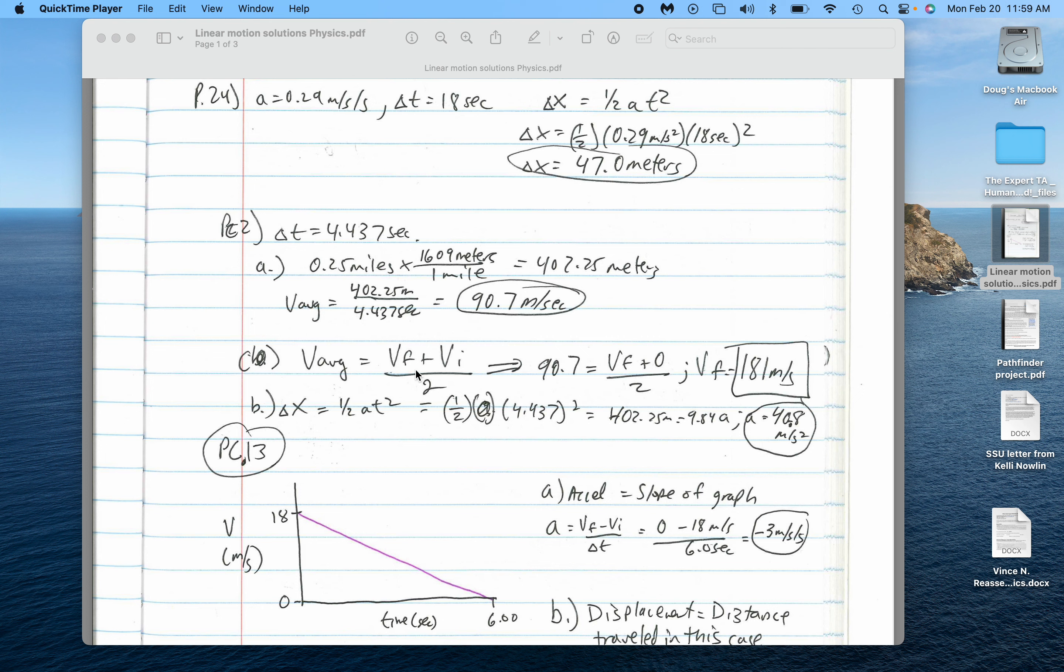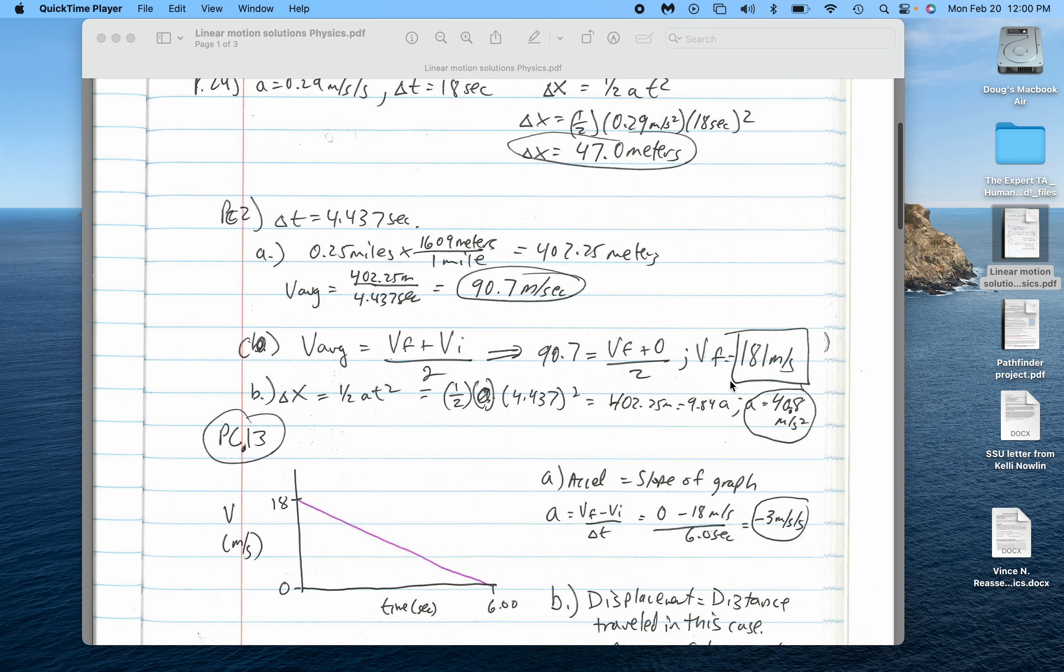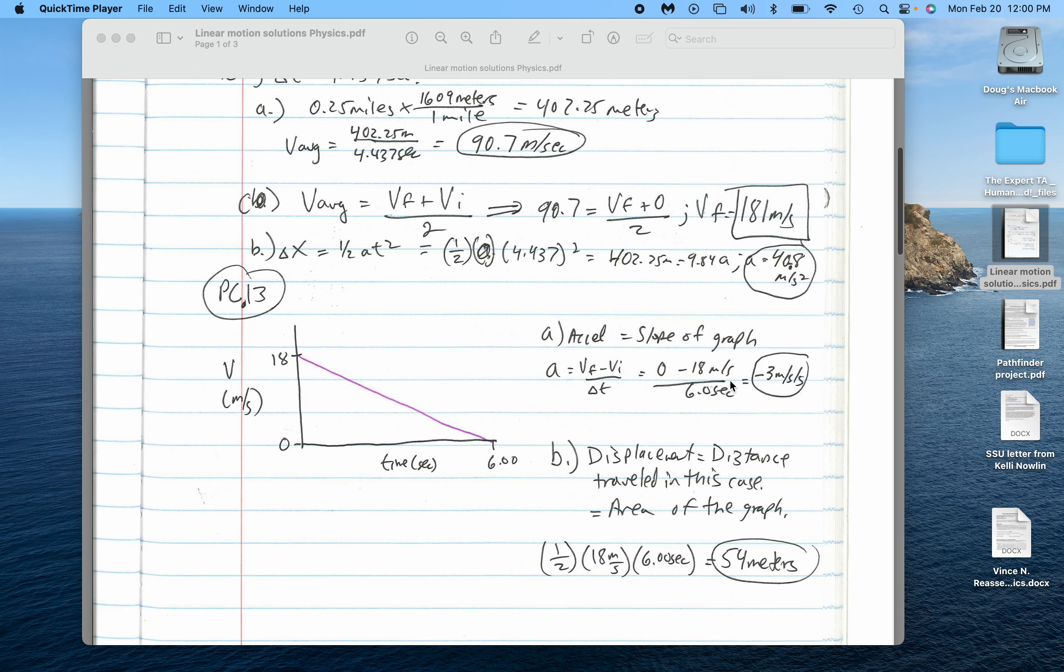For part C, there's a couple ways you could have done this also. You could have realized that the initial and final velocity divided by 2 would equal 90.7 and you start from rest, so the final would be 181 meters per second. Or you could have done VF equals VI plus A times T. This A times T would give you also 181 meters per second. Lots of ways to do things.